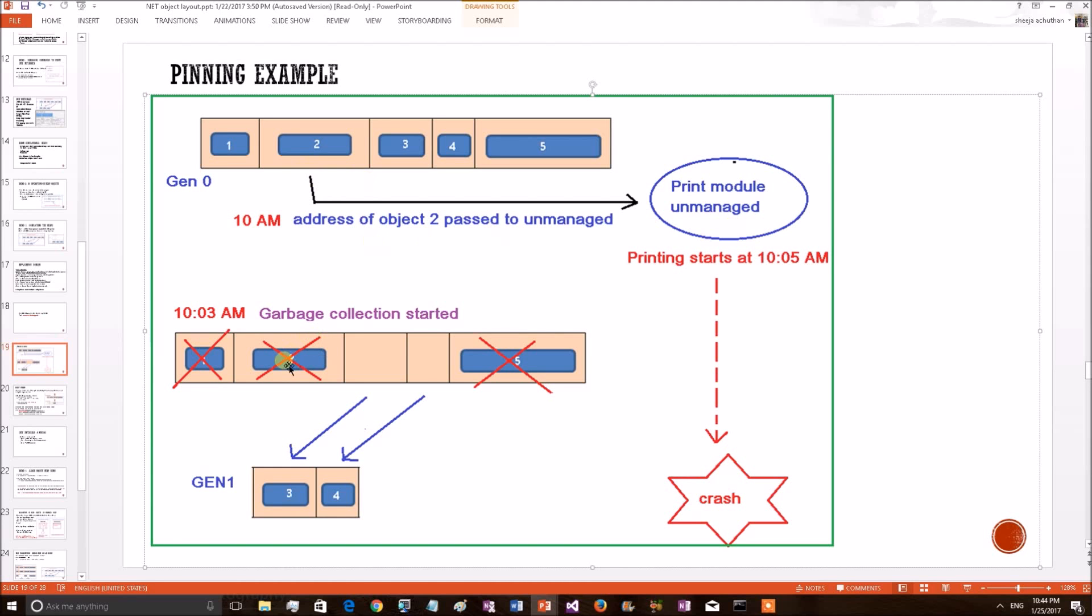So, it can pick the object 2, so the object is not existing. Now consider, after 2 seconds the printing got started and the unmanaged module is trying to access this object 2, which is not existing. This will result in application crash.